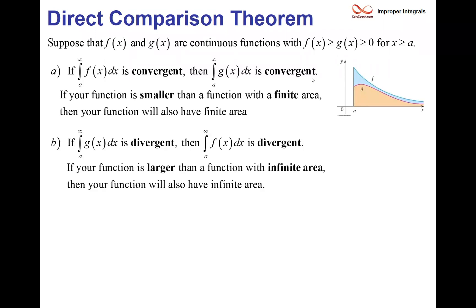The direct comparison theorem says: when you have two functions and one is greater than the other on some interval from a to infinity, to say something about the lower function you need the area under the larger function to be convergent. If the area under F equals 7, then the area under G, which is less, must also be convergent. Conversely, if the area under G diverges to infinity, then the area under F must also diverge.